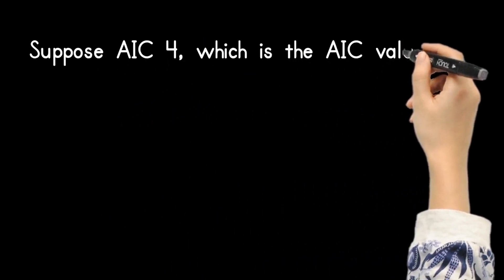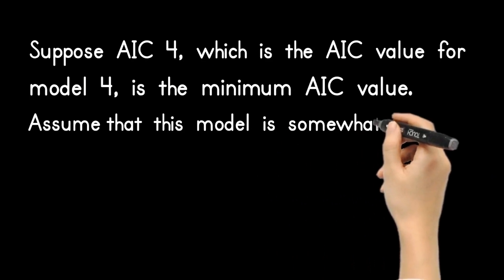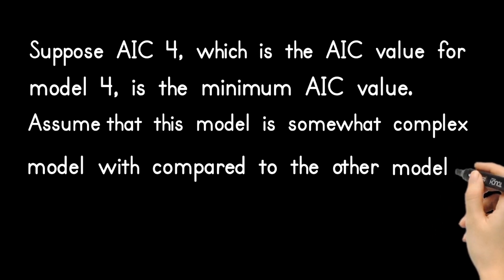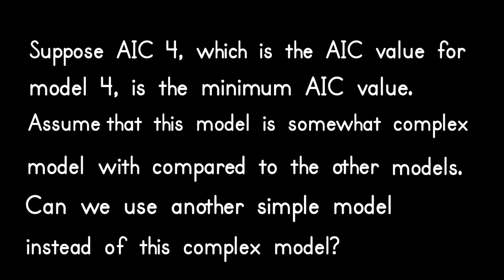Suppose AIC 4, which is the AIC value for model 4, is the minimum AIC value. Assume that this model is somewhat complex compared to the other models. Can we use another simple model instead of this complex model?